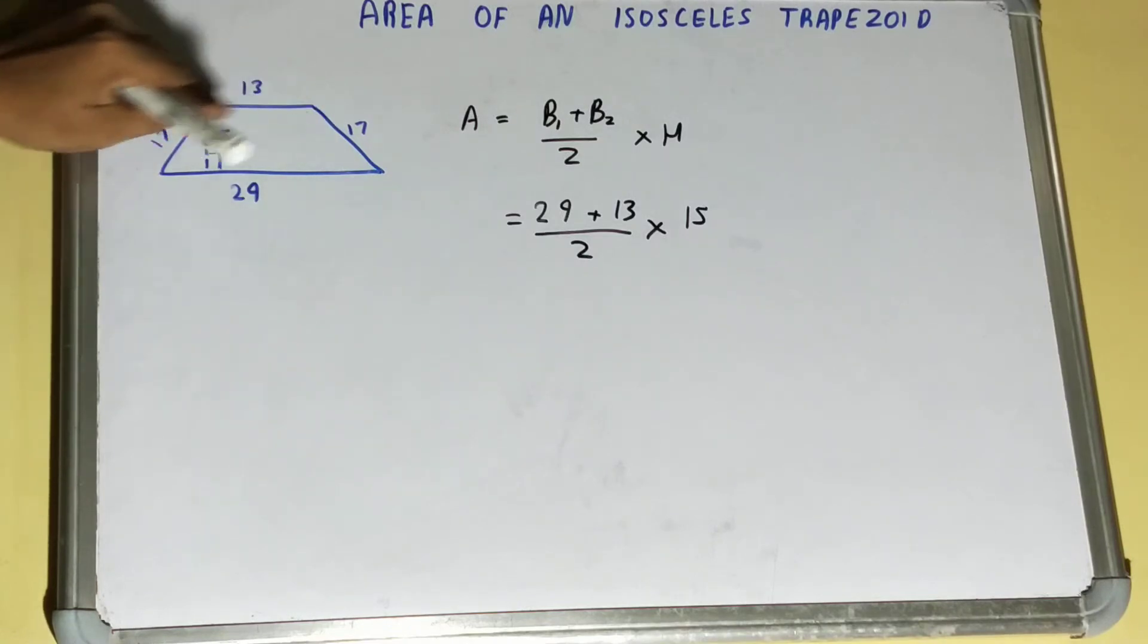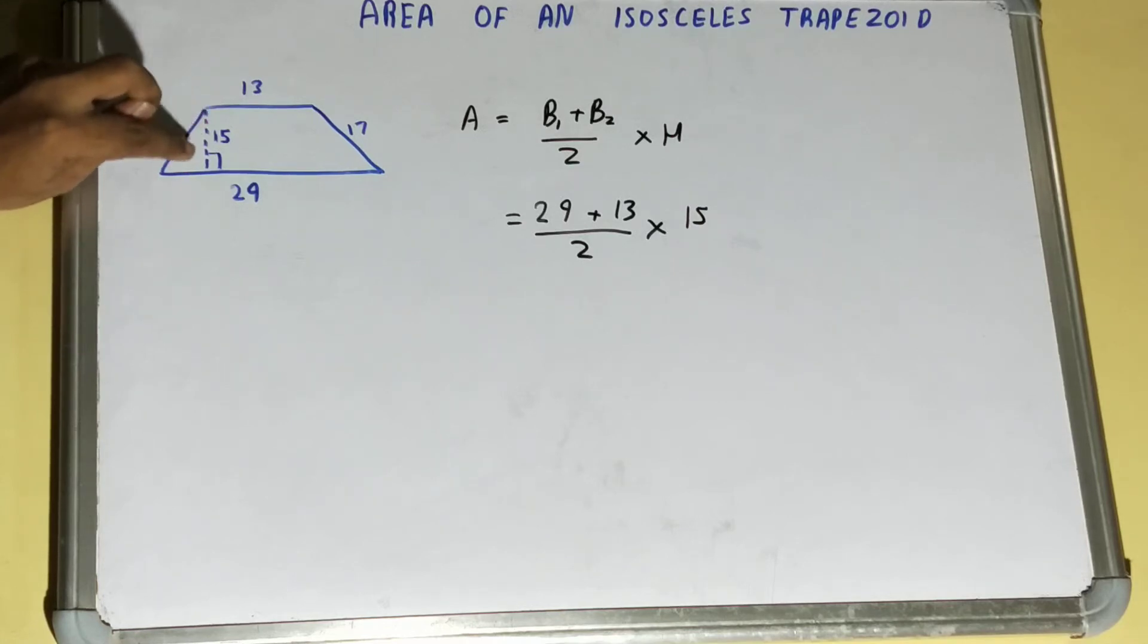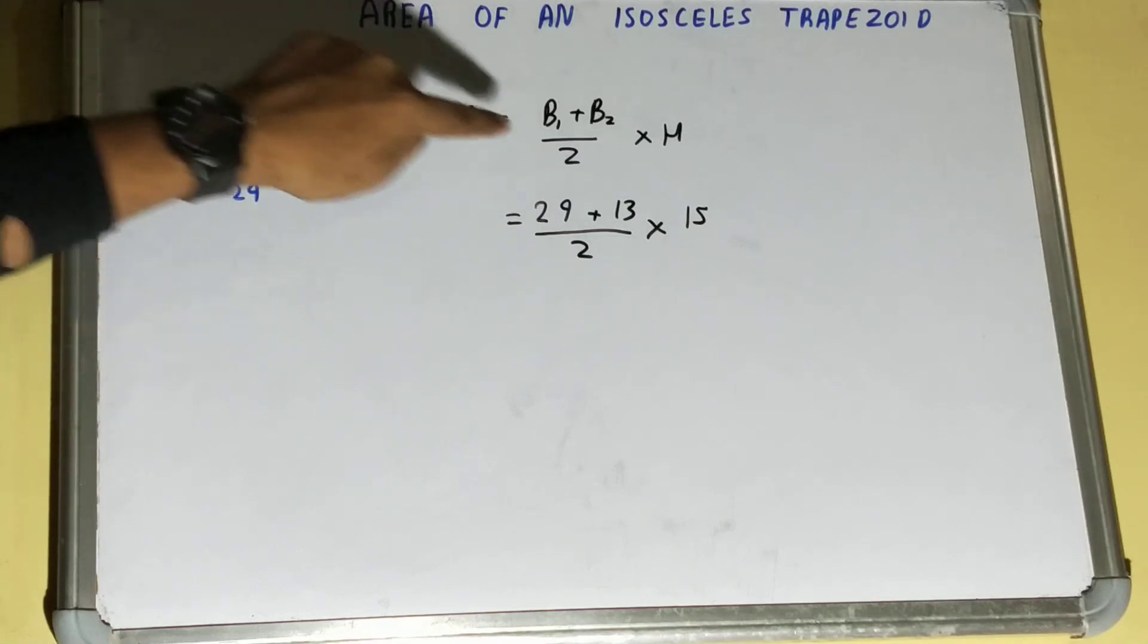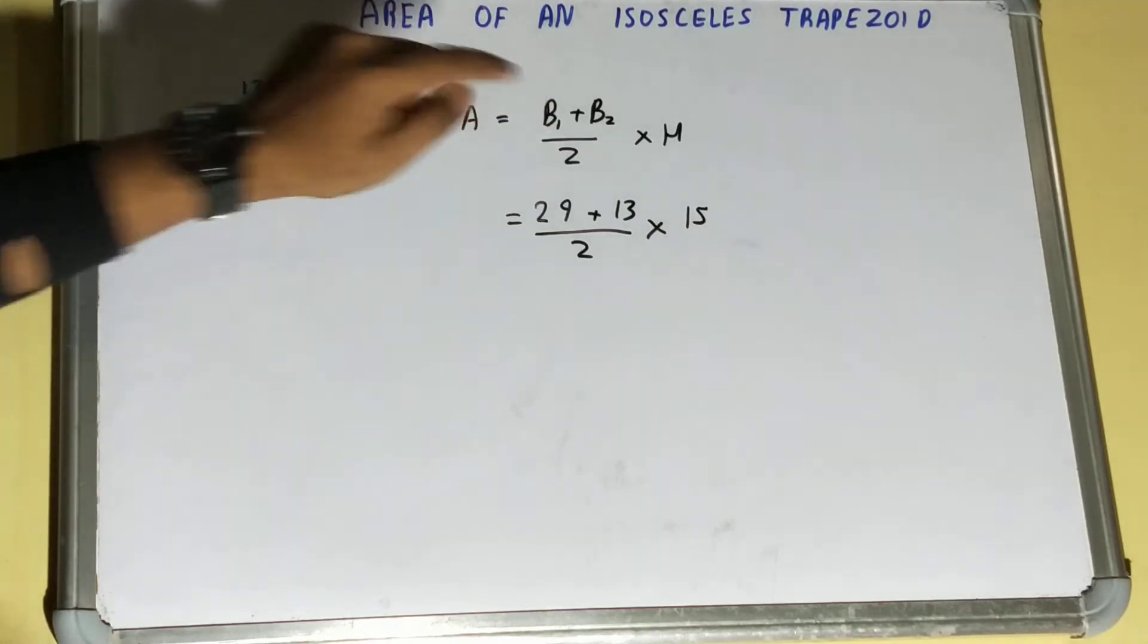Remember this: the bases will be considered on the basis that they are parallel and the perpendicular is falling on that base. Then you can consider it a base, and the bigger one will be considered as B1, smaller one B2.